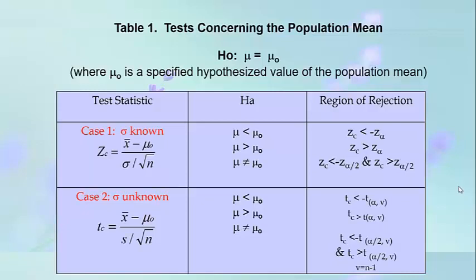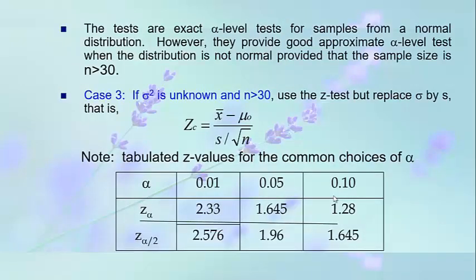Case two: when the standard deviation is unknown, the t-test is used. The alternative hypothesis may be mu less than, greater than, or not equal to the hypothesized value, with the rejection region taken from the t-table. These tests are exact alpha-level tests for samples from a normal distribution; however, they provide good approximate alpha-level tests when the distribution is not normal, provided the sample size n is greater than 30.